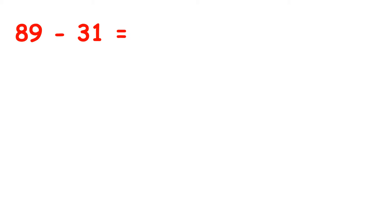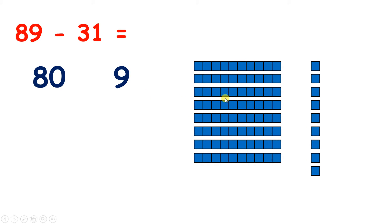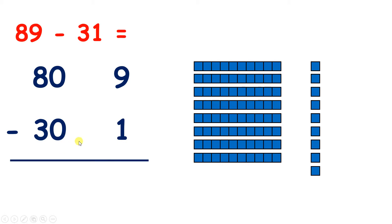Now we have 89 take away 31. How can we partition the numbers 89 and 31? Well, we can partition 89 into 80 and 9, because we have 8 tens and 9 units, and we can partition 31 into 30 and 1. So we're going to subtract 30 and 1 from 80 and 9.